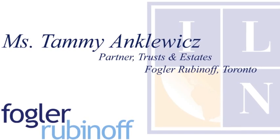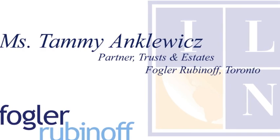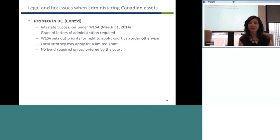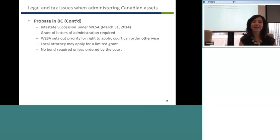In terms of Ontario's probate fees — when they were called probate fees, they were half a percent; when renamed the estate administration tax, they were tripled. On the first $50,000, it's still payable at the rate of half a percent, but for everything above that, the rate will be one and a half percent.